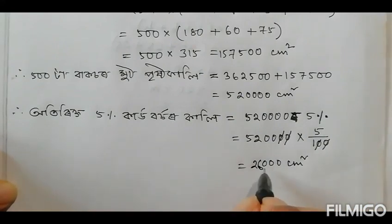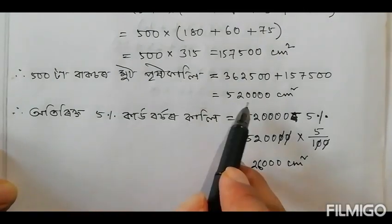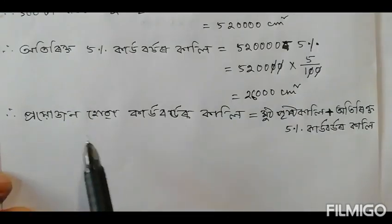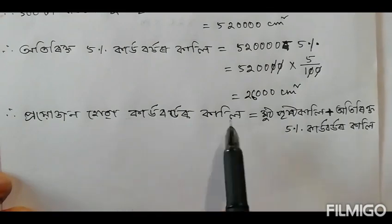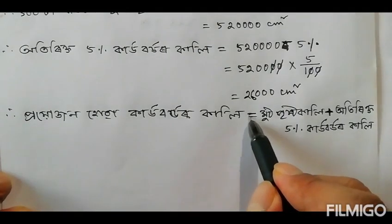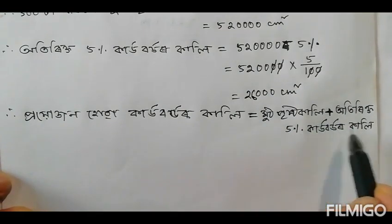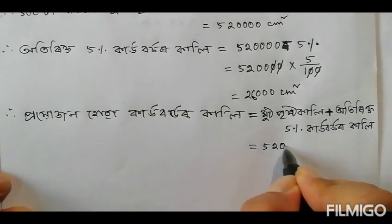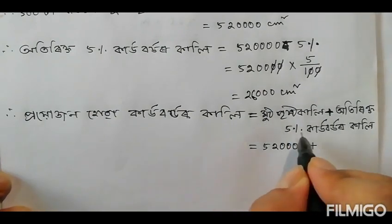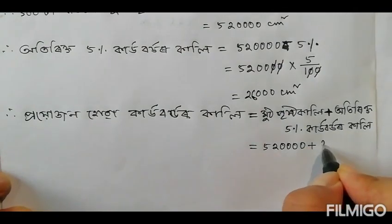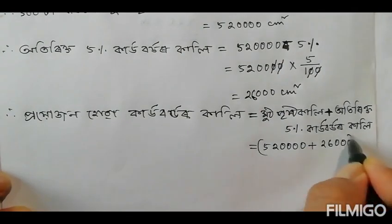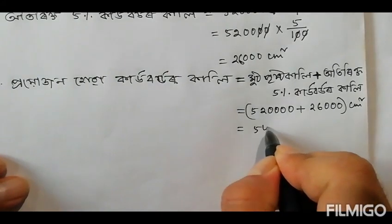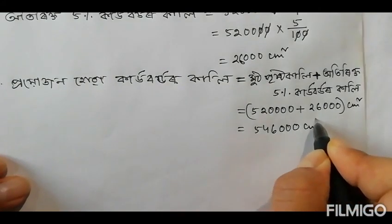5% cardboard extra — so we add this value. The total cardboard area, adding the 5% extra, gives us 5,461,230 cm².